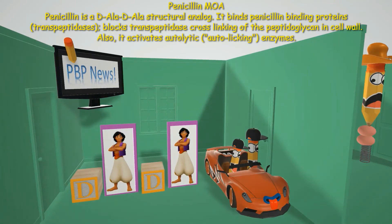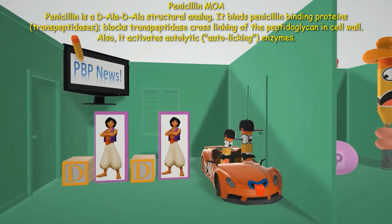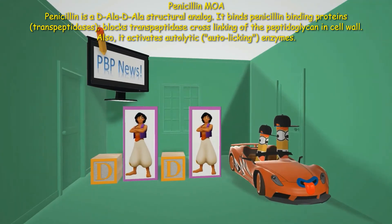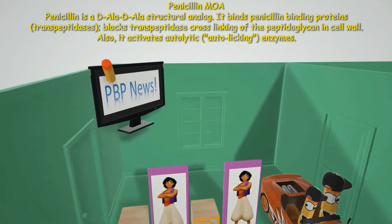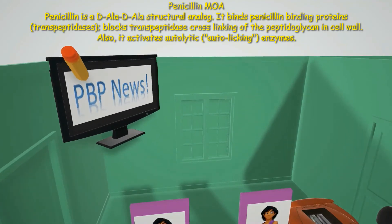Now mechanism of action takes place in the waiting room. The kids are excited about the toys — a D-block and an Aladdin — to help us remember that penicillin is a D-ala D-ala structural analog. The PBP News screen, with a pencil going through it, reminds us that penicillin binds to PBP — penicillin binding proteins.